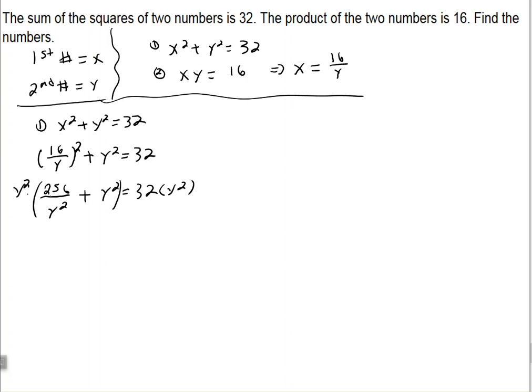So if I distribute y squared times 256 over y squared, the y squared would cancel. That gives me 256. And then y squared times y squared at the exponents is y to the fourth.